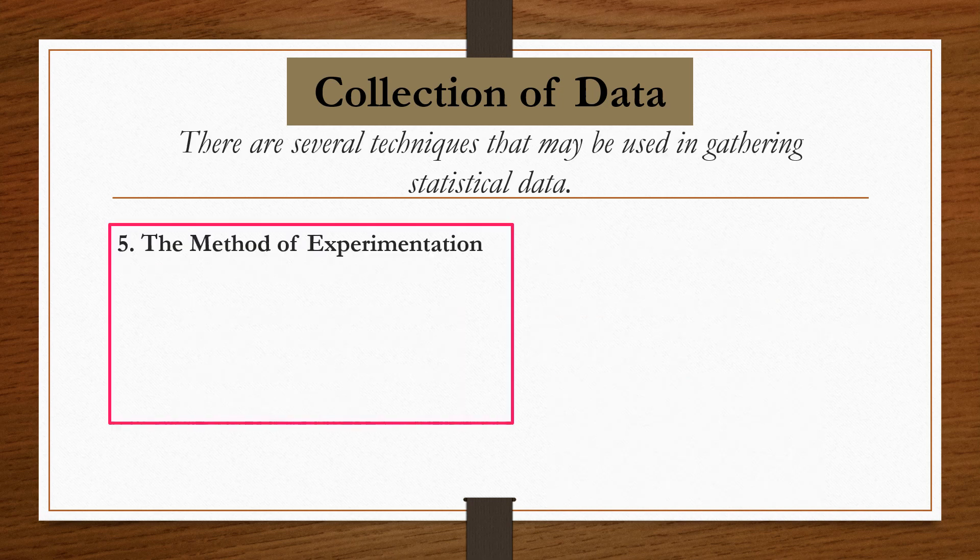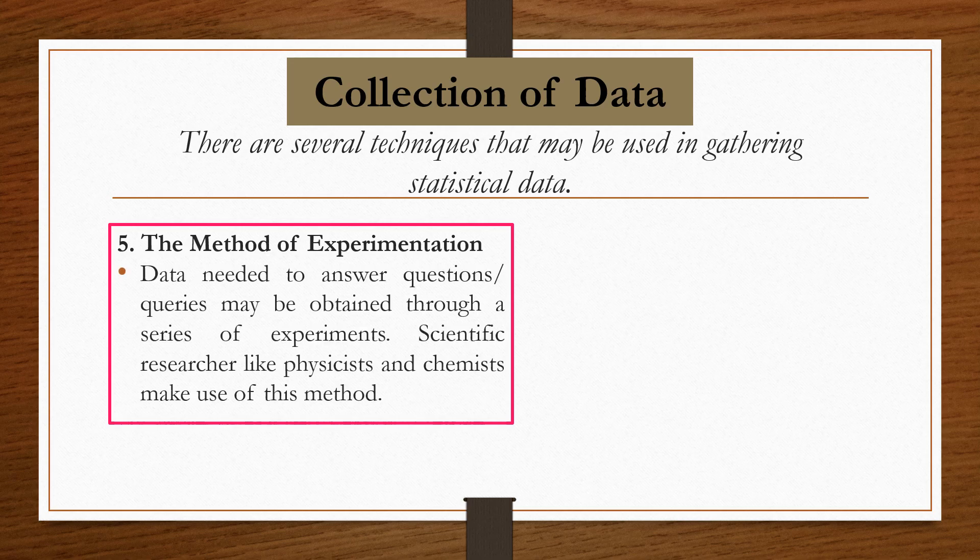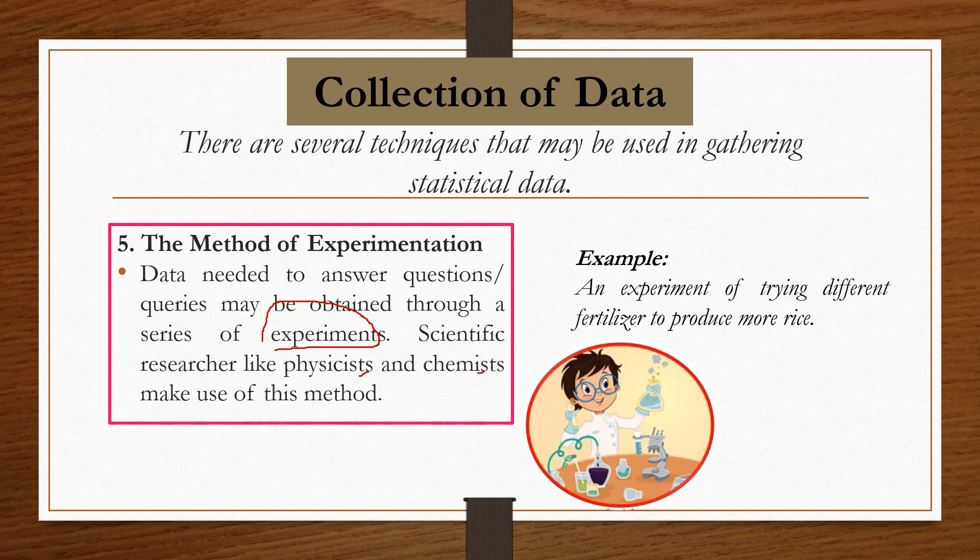The fifth one is the method of experimentation. Data needed to answer questions or queries may be obtained through a series of experiments. Scientific researchers like physicists and chemists usually make use of this method. For example, a researcher conducting an experiment wants to try different fertilizers to check which fertilizer can help to produce more rice.